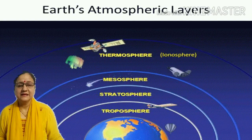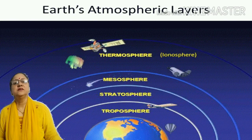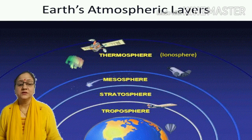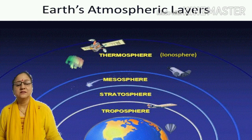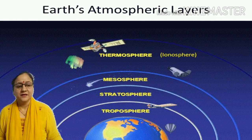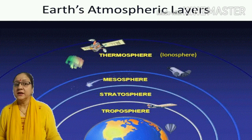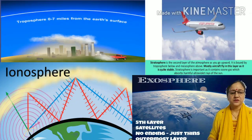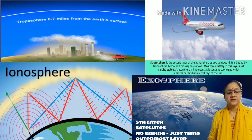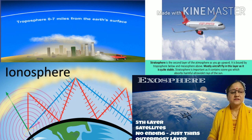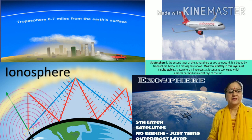Now children, let us understand the names of the different layers of the atmosphere. We are going to proceed from the surface of the earth towards the outermost layer. The first layer from the surface of the earth is troposphere, then stratosphere, then ionosphere, and then exosphere. Troposphere is the layer where weather occurs. It is the lowest atmospheric layer and begins at the surface of the earth and extends out to about 0 to 15 km.